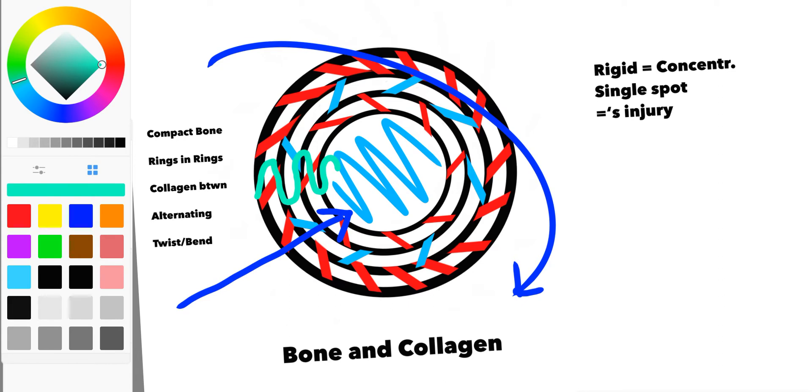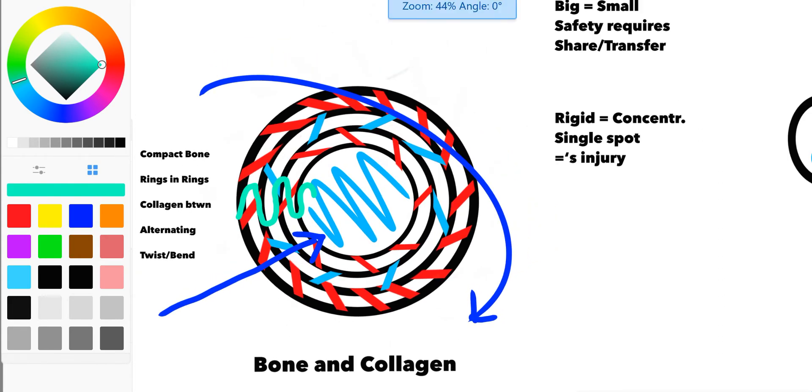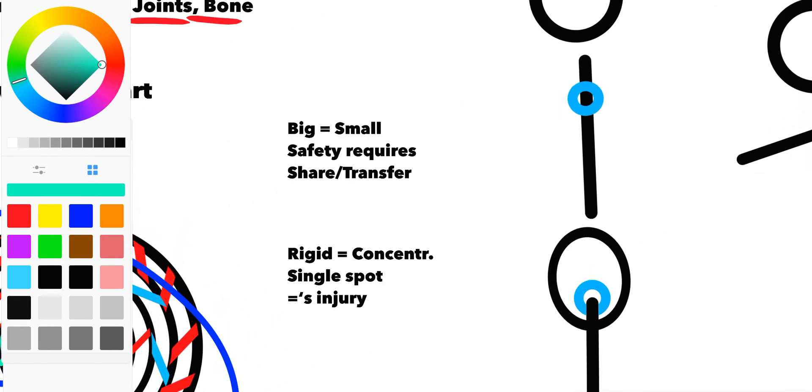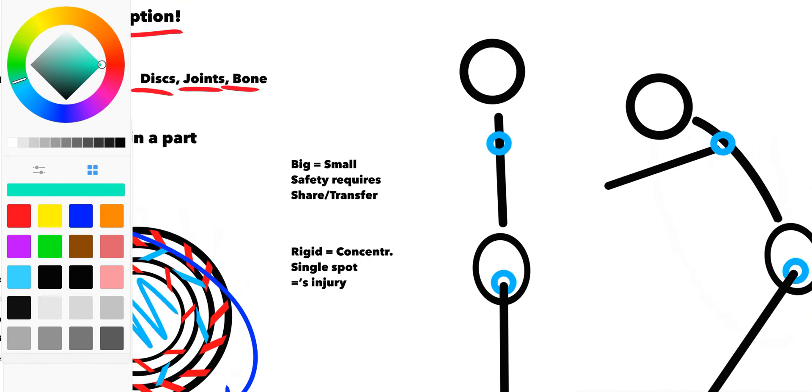This is a great example on a small level, but it's actually what happens in the bigger structures as well. In fact, the safety and security of the human body requires this and needs to transfer just like it did in the bone, from the small to the big and the big to the small, all throughout the entire body.